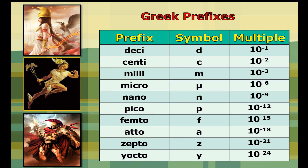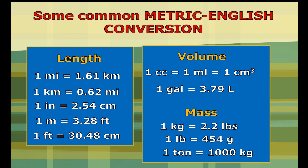The Greek prefixes indicate whether the value is bigger than 1 or smaller than 1, which is the base unit. For example, deci is 1 times 10 raised to negative 1, and yocto (small y) is 1 times 10 raised to negative 24. Because of the two systems of measurement, here are some metric-English conversions in terms of length, volume, and mass.